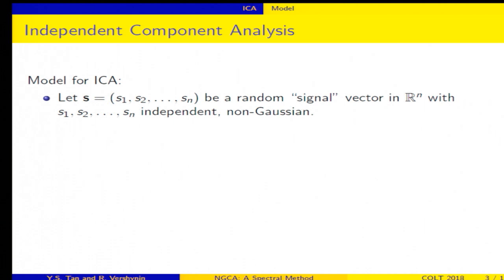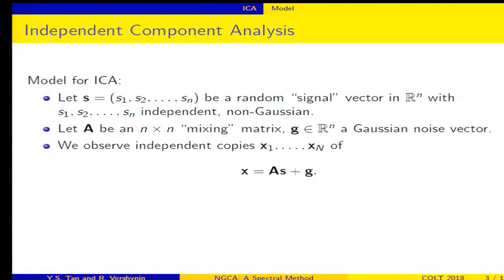so you have a signal vector S, where the components S1 to SN are independent and non-Gaussian. We have an n-by-n mixing matrix A and a Gaussian noise vector G. And what we observe are independent copies X1 to XN of our random vector X, which is defined by AS plus G. And from these independent copies, you want to learn the mixing matrix A. So that's the goal of ICA.